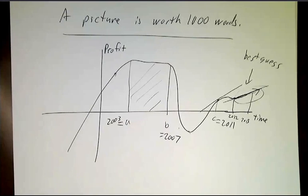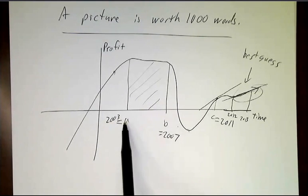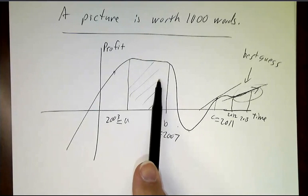So suddenly all of these abstract mathematical ideas—area under a curve, slope of the tangent line, equation of the tangent line—actually mean something. The area under the curve between 2003 and 2007 is how much money you made between 2003 and 2007.